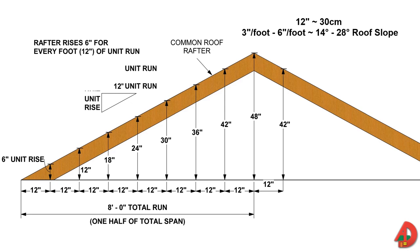The total rise of a roof must be known before setting the roof ridge to its correct height and attaching the rafters. The total rise is calculated by multiplying the total run by the unit rise.